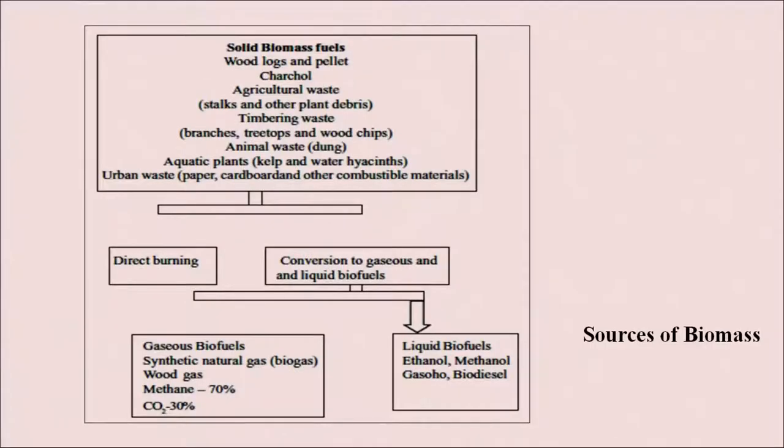Now we will discuss the sources of biomass. There are solid, liquid and gaseous sources of biomass. Solid biomass fuels include wood logs and pellets, charcoal, agricultural waste, stocks and other plant debris, timbering waste like branches, tree tops and wood chips, animal waste which includes dung, aquatic plants like kelp and water hyacinth, and urban waste which includes paper, cardboard and other combustible materials.